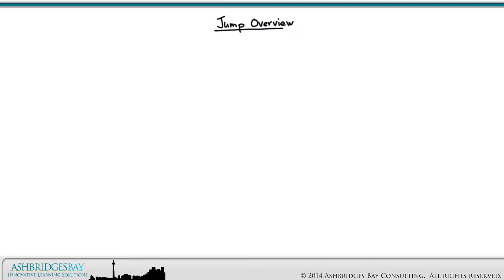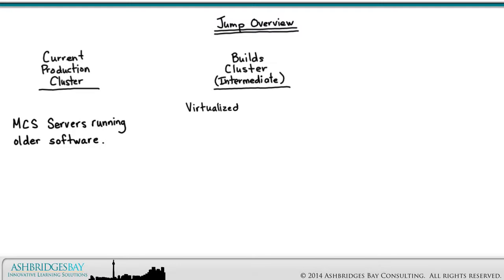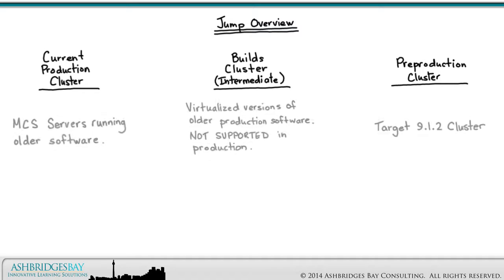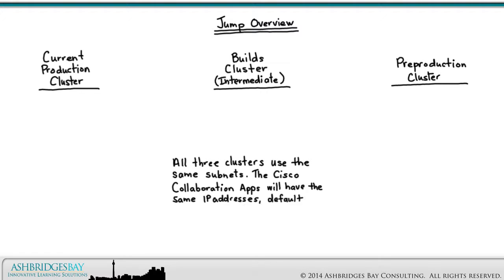Our Jump to 9.1.2 environment has three clusters. The Current Production cluster has MCS servers running old software. Next, we have the Builds or Intermediate cluster, which contains virtualized versions of older production software — this is not supported in production. And finally, the Pre-Production cluster, which is the Target 9.1.2 cluster. All three clusters use the same subnets; the Cisco Collaboration apps will have the same IP addresses, default gateways, DNS, and NTP servers in all three clusters. The Builds and Pre-Production clusters are isolated and will be deployed in a sandbox. The VLANs supporting these clusters will have no routed interfaces attached to them.